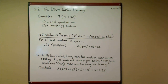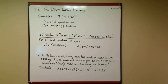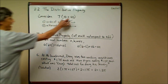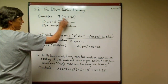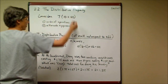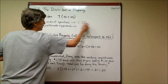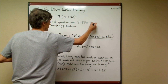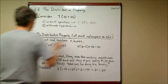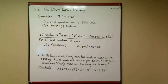Let's consider the example: seven times the quantity 10 plus 40. We can work this two different ways. One is to use the order of operations, which says to add the stuff inside the parentheses first — that's the priority — and then multiply: seven times fifty is three hundred fifty. But there's another way you can do this, and that's the distributive property.